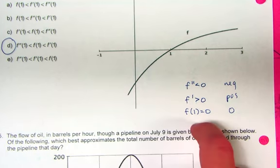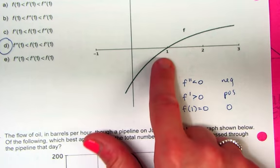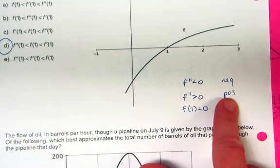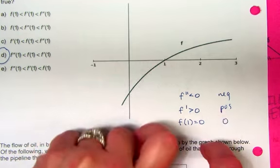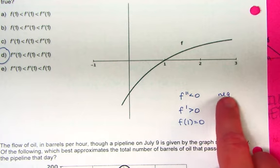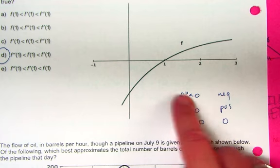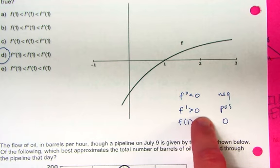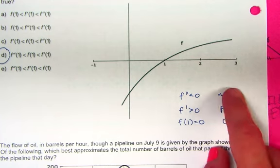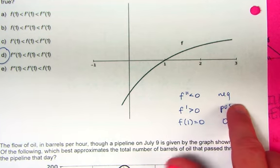So if we're comparing all the different signs of f's different values at 1, well, f of 1 is 0 because it goes through that point. f prime of 1 is positive because f is increasing. And f double prime, because it's concave down, is negative. So to order those from smallest to greatest, this is negative, this is 0, and this is positive.